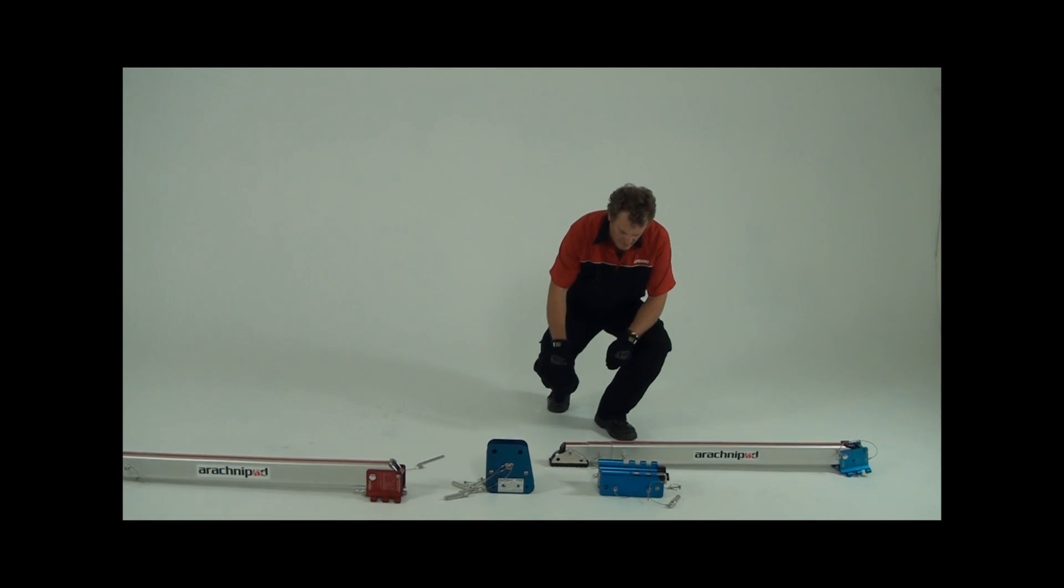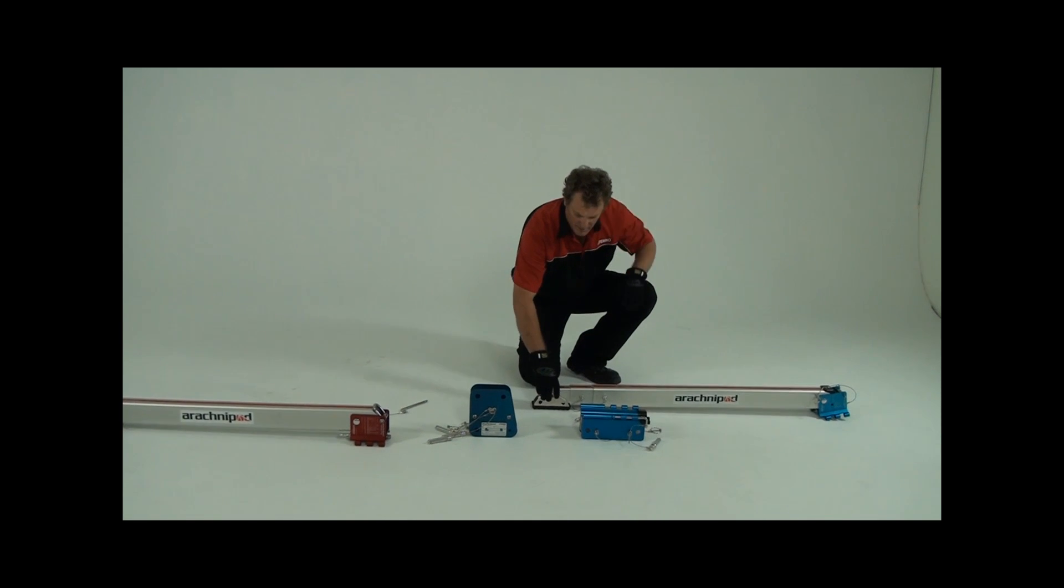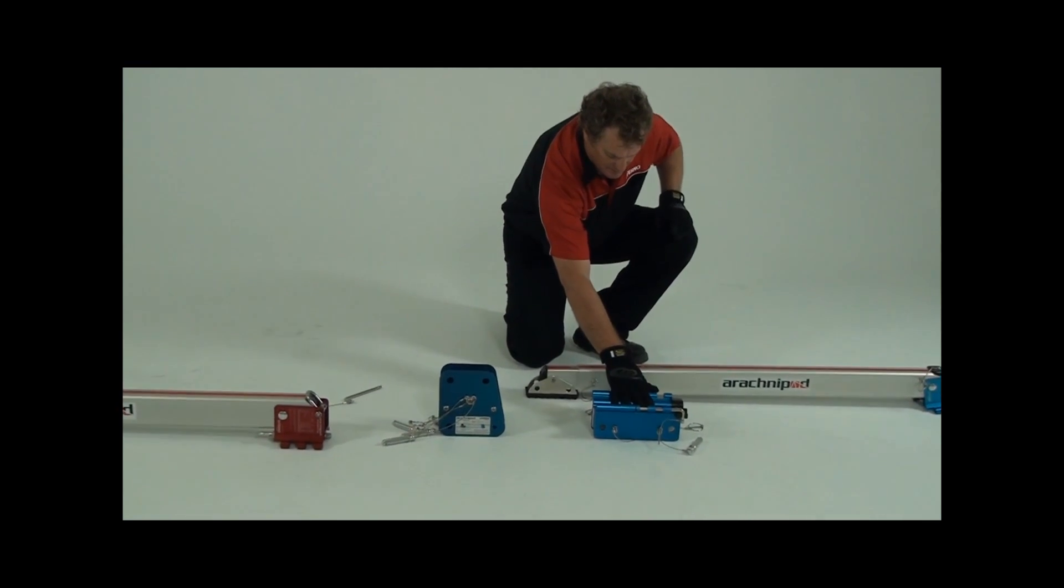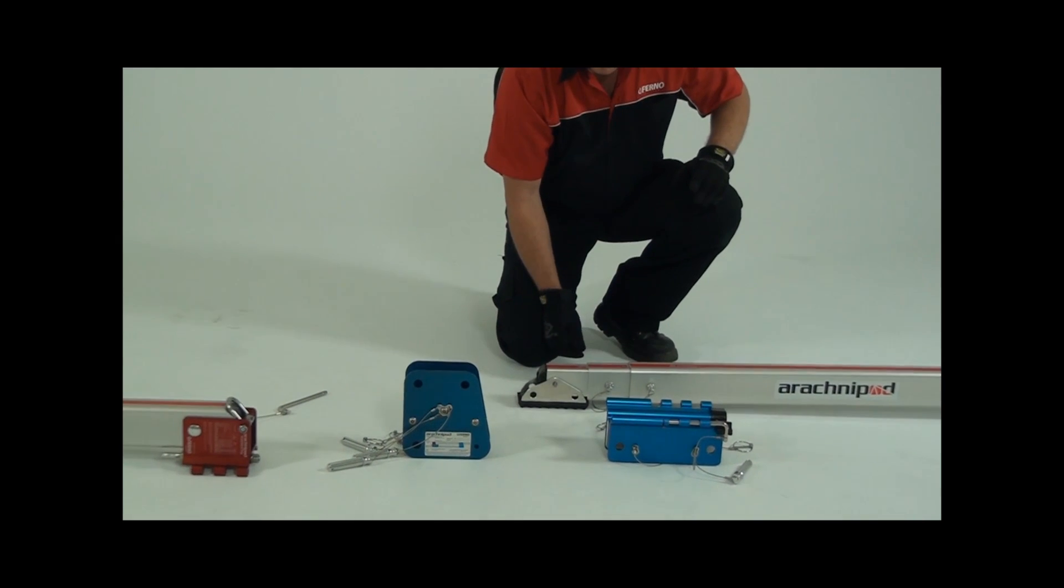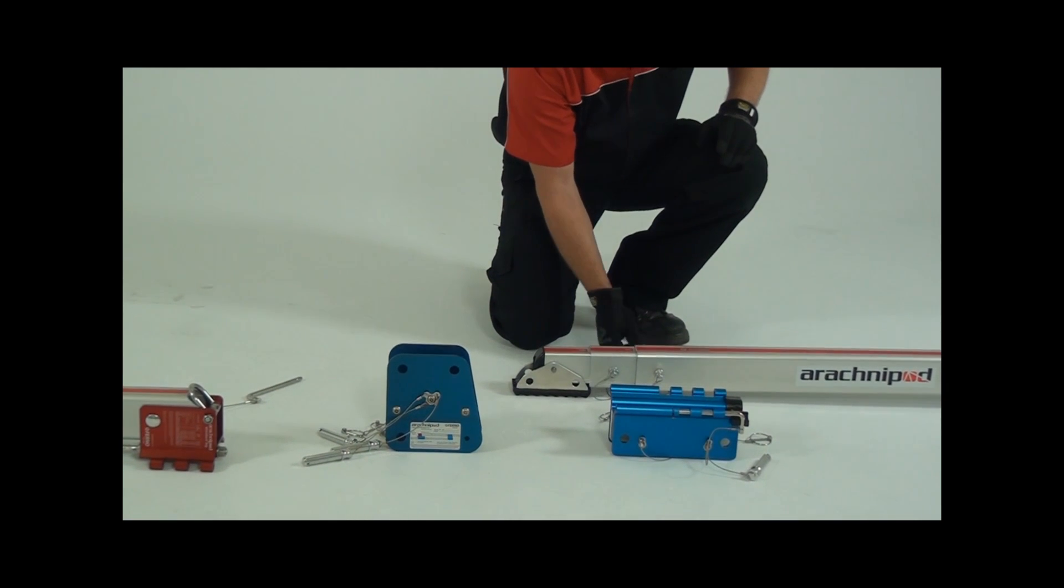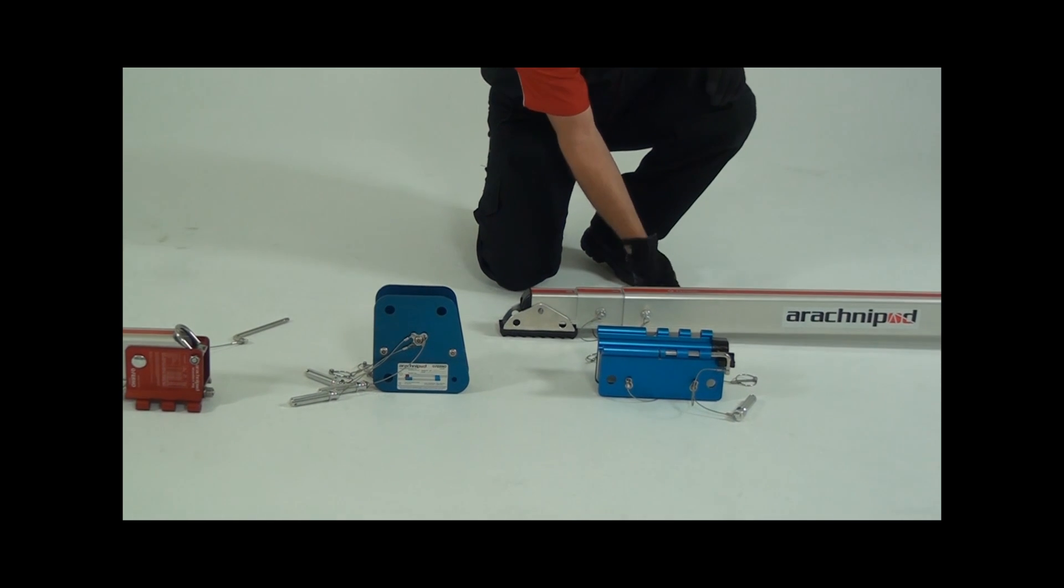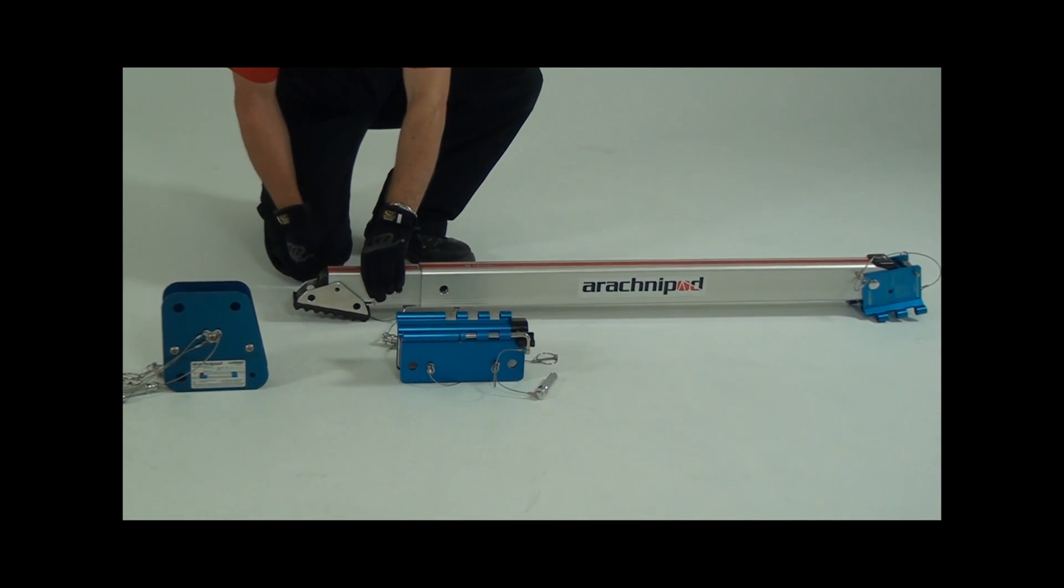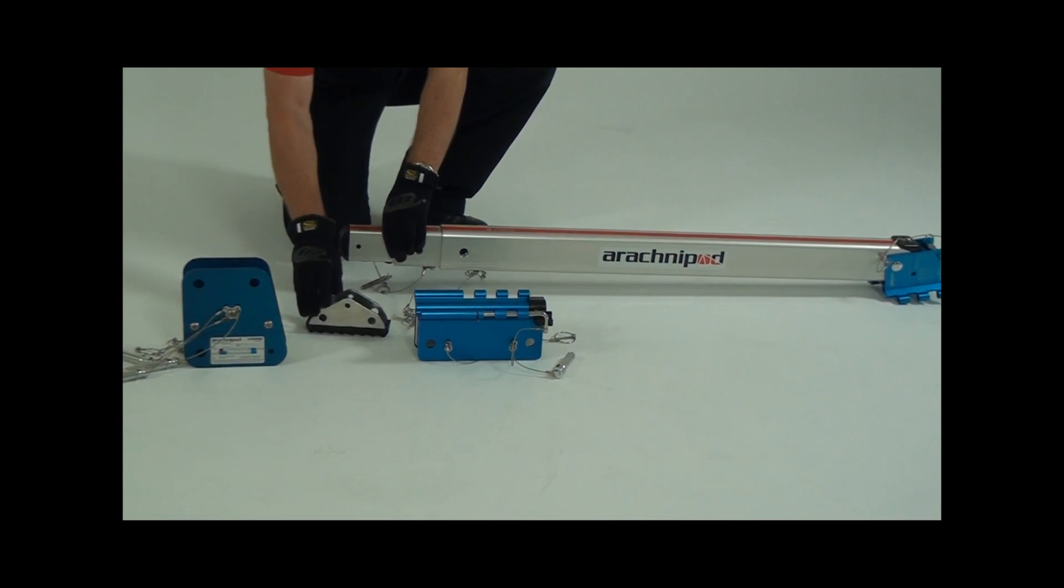The extension kit comprises two components: the extender plate and extender head. First, remove the lazy leg's foot and extend the leg out. Make sure you keep the foot's detent pin because you'll need to use it for the extender plate.